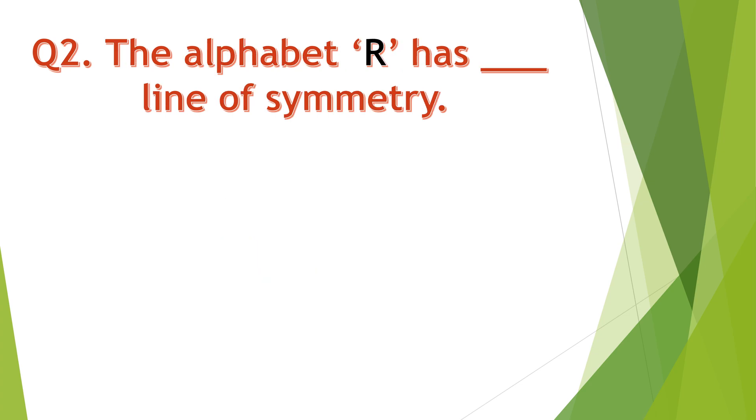Question number 2. The alphabet R has dashed line of symmetry. Your time starts now.